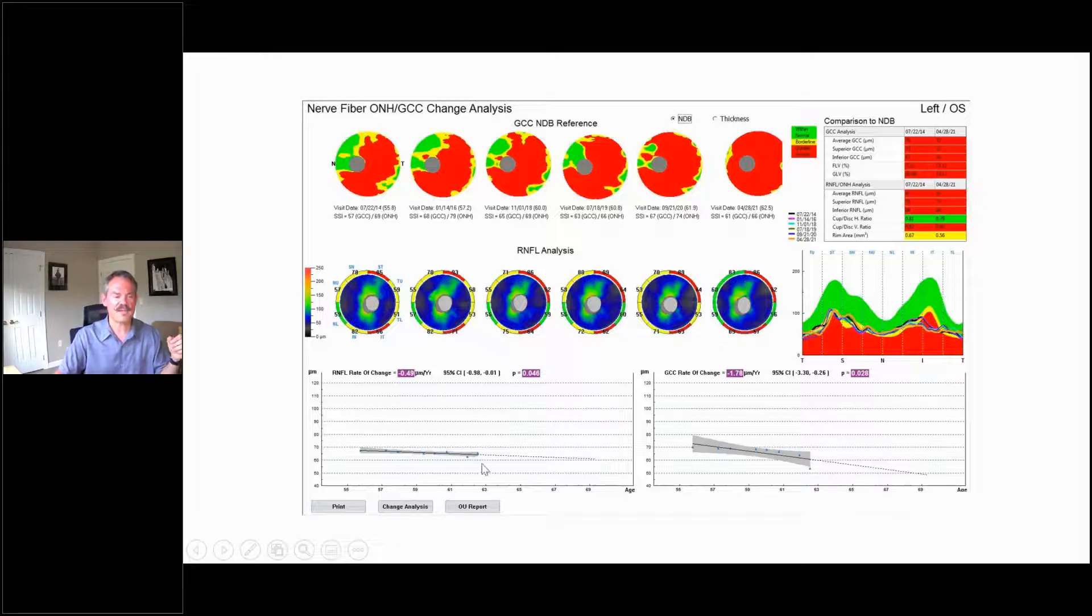Again, we're not sure about that because we're at floor, and the nerve fiber layer in the left eye is being flagged. Those are all things we have to be careful about.